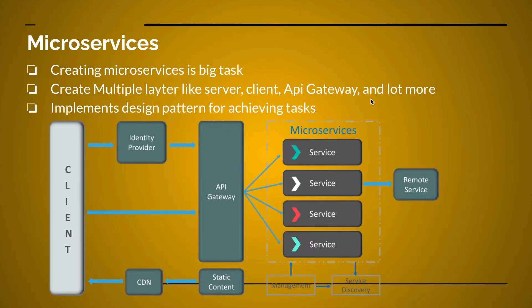As we discussed, microservices is a big task. If you look at the diagram, the client connects with the identity provider and then the API gateway. All requests go through the API gateway, which is responsible for sending the request to the particular services with the particular endpoints. For example, if you are fetching data for the order service or customer service, the endpoint would be something like localhost:8080/order or /customer.